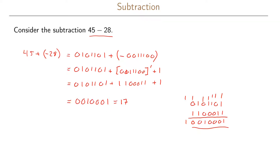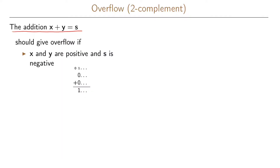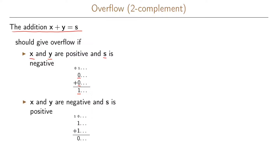So we performed the subtraction and got the right answer. Looking closer at the carry bit that appeared: this relates to overflow in the two's complement case. We want to perform x plus y equals s, where x and y can be negative. Overflow occurs if x and y are both positive (MSB = 0) and s is negative (MSB = 1), or if x and y are both negative (MSB = 1) and s is positive (MSB = 0).